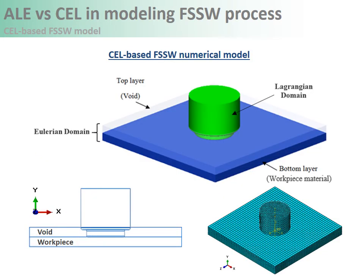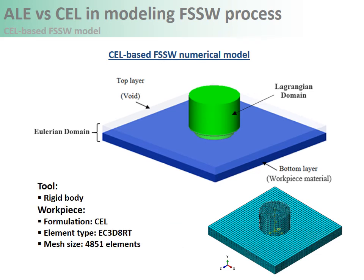Our CEL-based model is shown in these figures. The reference volume is the bottom layer where the material to be welded is assigned. The top layer of the Eulerian domain is left as void to allow visualization of the flow around the tool. Here are the characteristics of the CEL-based model.